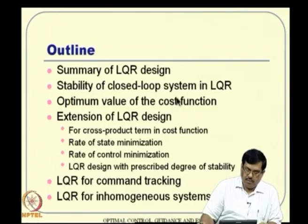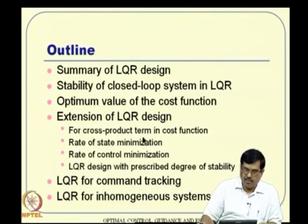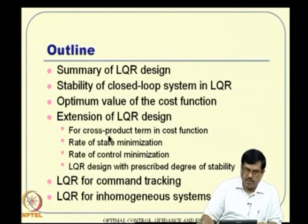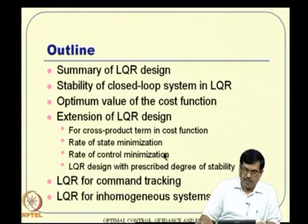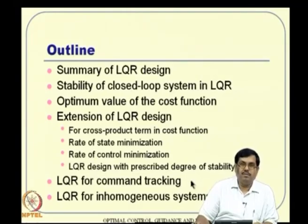That is closely linked to the stability result. Then we will have a couple of extensions of LQR design — there are quite a few extensions possible in the literature. We will give a few: first, the cross product term in the cost function, something like X transpose W U. Then rate of state minimization, meaning you want to minimize X-dot. Similarly, rate of control minimization — you want to minimize U-dot. And there is also an extension for prescribed degree of stability.